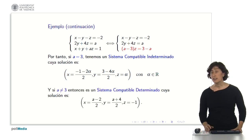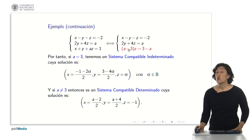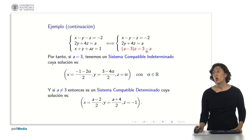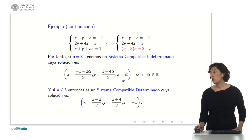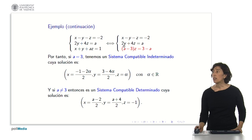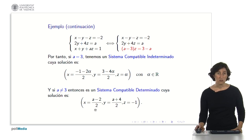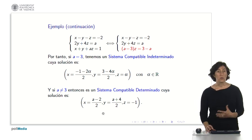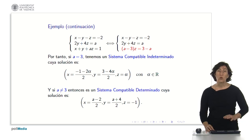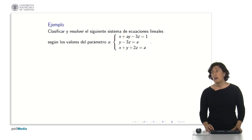What happens if a is different from 3? If it is different from 3, this number is not 0 and can be moved to the other side by dividing, so the system is consistent and determined with a single solution. Dividing gives z equals minus 1. Substituting into the second equation, y is worth a plus 4 divided by 2, and replacing into the first, x equals a minus 2 divided by 2. The system is consistent and determined with a single solution. As you can see, it works exactly the same, and we only need to be careful not to multiply or divide by zero.